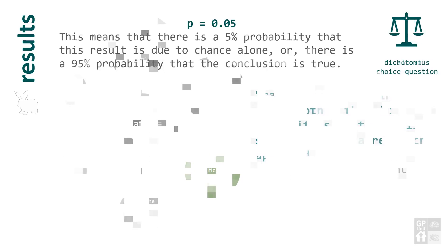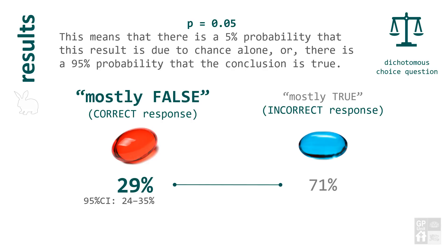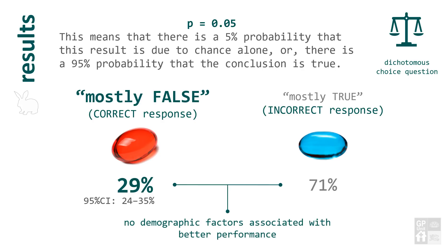In the dichotomous choice question on interpretation of p-values, 'mostly false' was the correct response. Only a quarter to a third of the participants answered correctly, and no demographic factors were associated with better performance. Most people just got it wrong — worse than guessing. If it were only a lack of knowledge, we would expect the majority to get it right, as some will know the answer and half of those who don't will guess correctly. The fact that the majority gets it wrong suggests an active common misunderstanding.